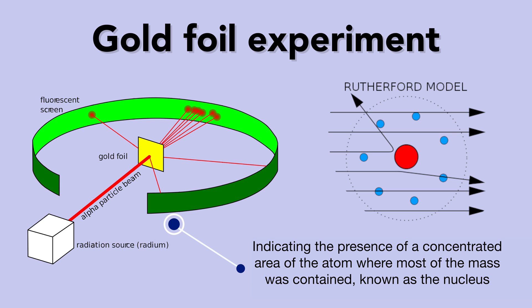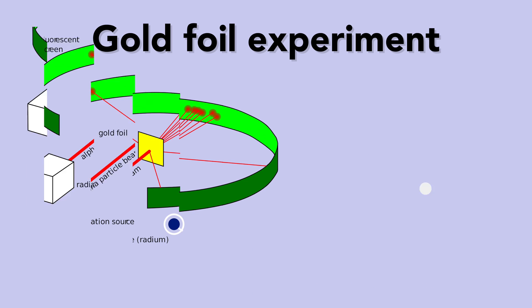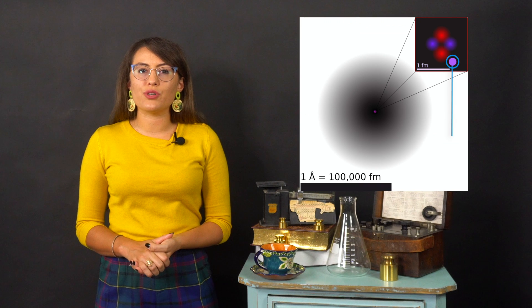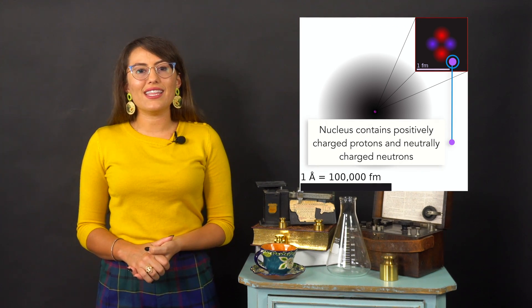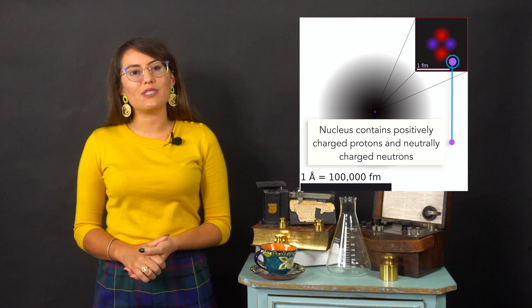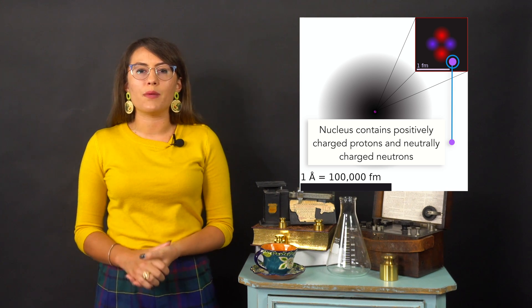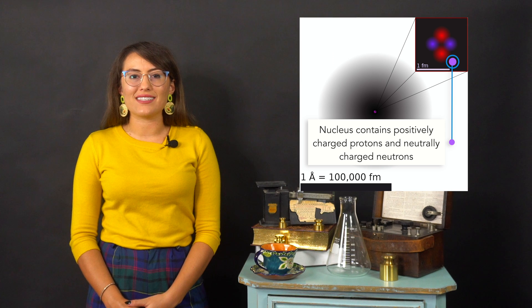These experiments, along with many others, have helped shape a modern-day understanding of the structure of the atom. We know that atoms are comprised of a nucleus, which contains positively charged protons and neutrally charged neutrons. In this area, it takes up an extremely small fraction of the atom's volume, but comprises nearly all of the atom's mass.